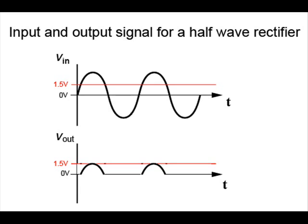At 1.5 volts, the diode turns on and acts like a resistor. As the input voltage continues to rise above 1.5 volts, the output voltage rises as well. You might wonder why the output voltage is zero when the diode first turns on, instead of jumping to 1.5 volts. This is because the diode is acting like a resistor, and the 1.5 volts used to turn it on can be thought of as dropping across it. The output voltage is defined as the input voltage minus V on, so it makes sense if you think about it.